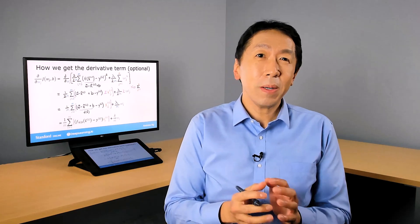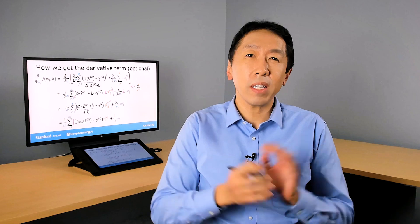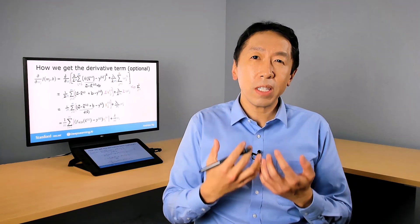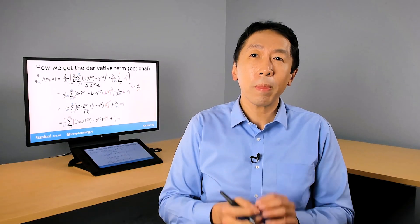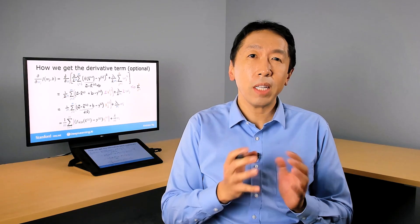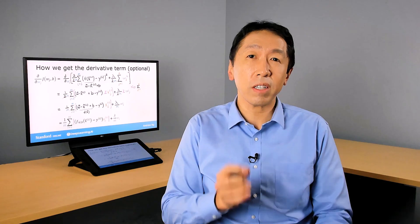So you now know how to implement regularized linear regression. Using this, you really reduce overfitting when you have a lot of features and a relatively small training set. And this should let you get linear regression to work much better on many problems. In the next video, we'll take this regularization idea and apply it to logistic regression to avoid overfitting for logistic regression as well. Let's take a look at that in the next video.